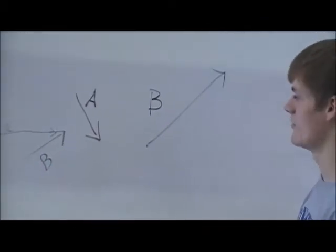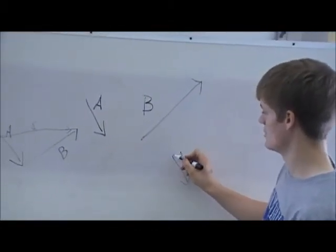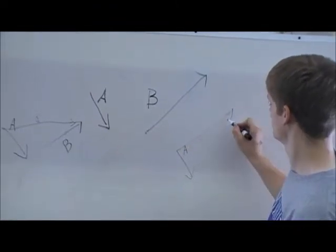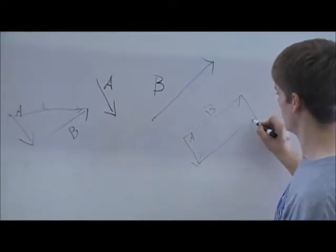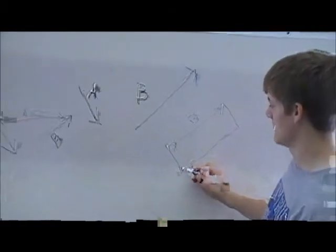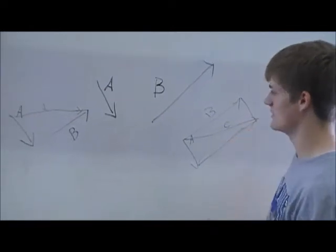For the parallelogram method, draw A, draw B from the same point and complete the parallelogram. Then draw from your start point to the opposite corner and you have C, A plus B.